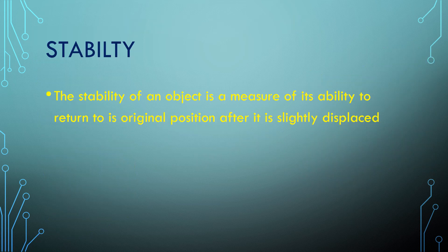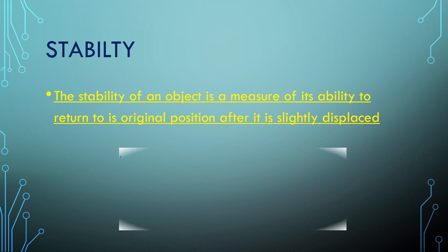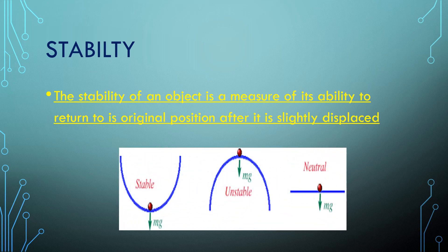The stability of an object is its ability to return to its original position when slightly displaced. Consider the example shown on your screen: a ball is placed in a bowl kept in a concave-like shape. When the ball is displaced from its main position, it will regain its original position and move back to its equilibrium position, so it is in the state of stable equilibrium.